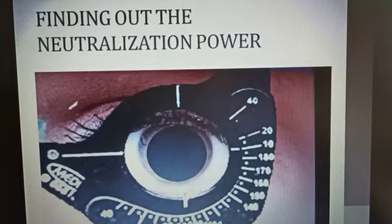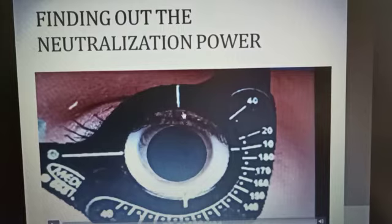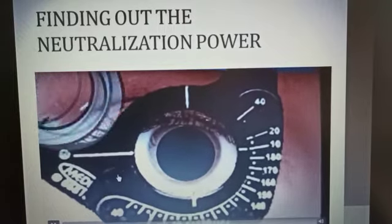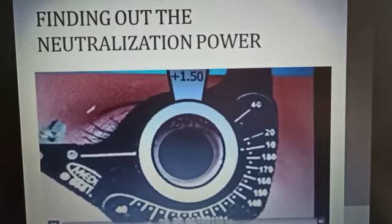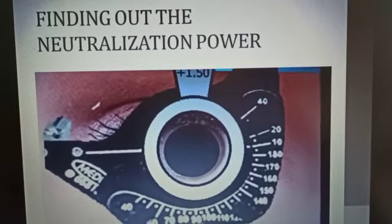In this video, I will show you one example of how to do a retinoscopy if the patient is having a spherocylinder power. You can see the patient is wearing a trial frame. For retinoscopy, you have to neutralize one meridian first, then proceed to the other meridian. Here, we will neutralize the vertical meridian first, then we will neutralize the horizontal meridian. We have placed the working distance — here we have been using plus 1.5, which means we are doing the retinoscopy at a distance of 66 centimetres.